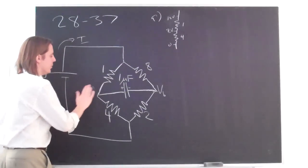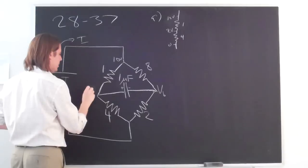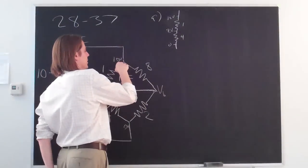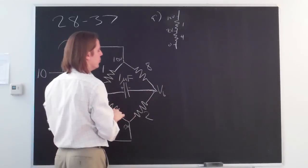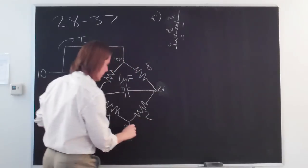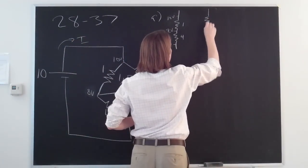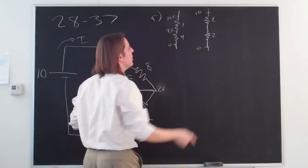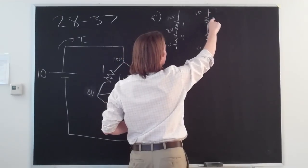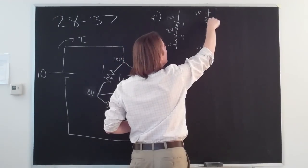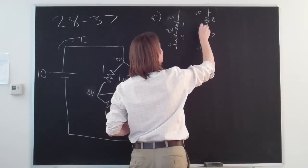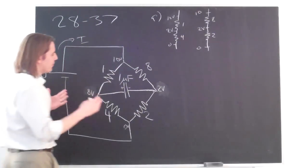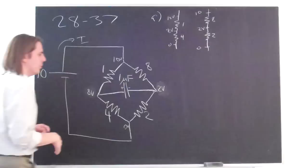So on the first branch, the voltage goes from 10 volts down to 8 volts, then down to 0 volts. The other side is the same idea: starting at 10 volts, going through an 8 ohm resistor then a 2 ohm resistor to reach 0 volts. With 10 volts across 10 ohms total, that's 1 amp. So 1 amp across 8 ohms drops 8 volts, bringing us down to 2 volts, then dropping another 2 volts to 0. The voltage difference across the capacitor is between 8 and 2, giving 6 volts across the capacitor.